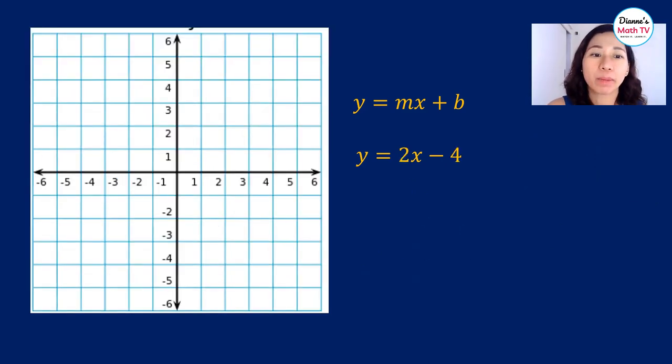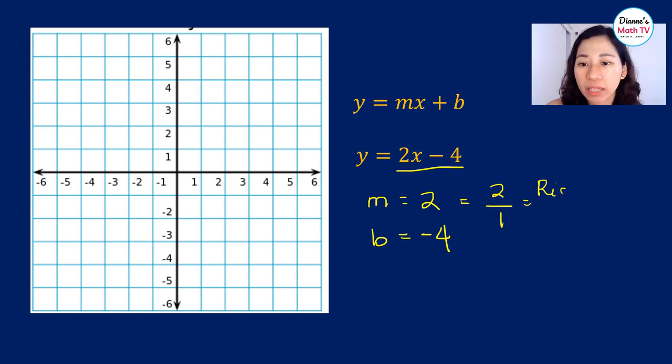Let's have another example. So in this case, we have y is equal to 2x minus 4. What is our m? Our m is 2 and our b is equal to negative 4. So what is 2? We will view this as 2 over 1. So our rise will be equal to 2 and our run will be equal to 1.